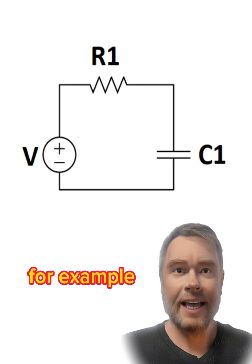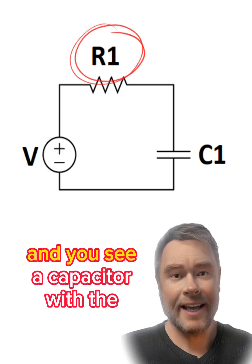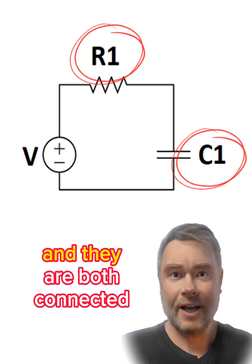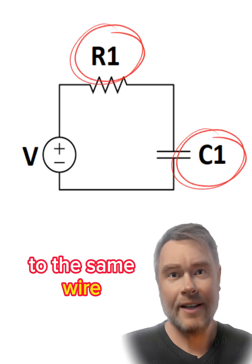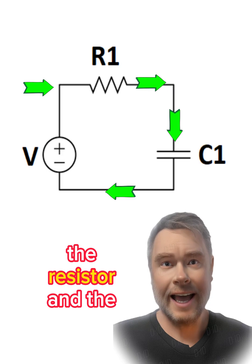For example, if you see a resistor with the reference designator R1, and you see a capacitor with the reference designator C1, and they are both connected to the same wire, then you know that current can flow through both the resistor and the capacitor.